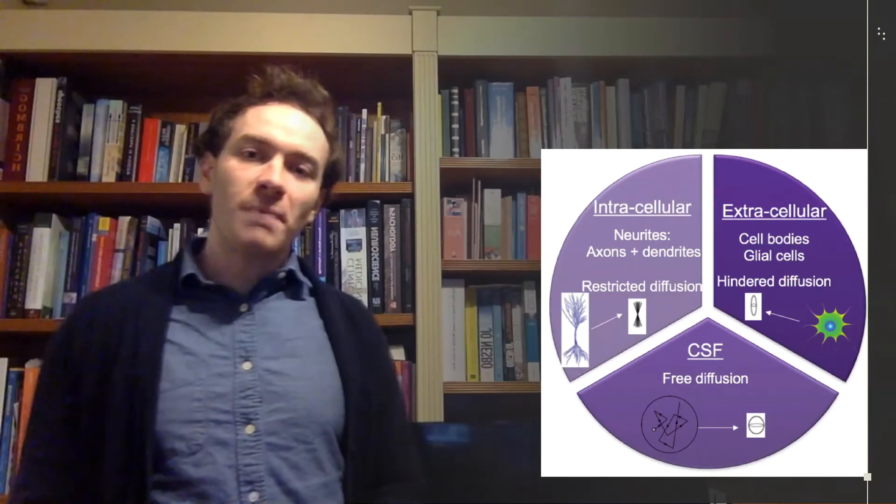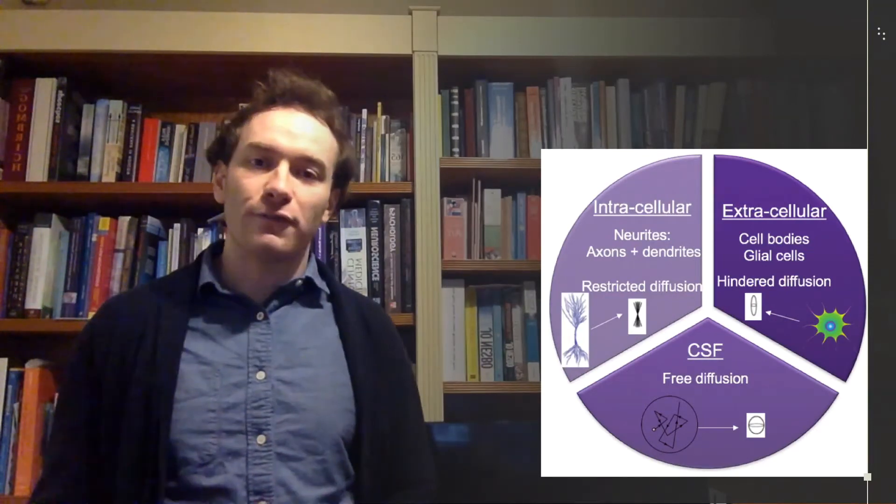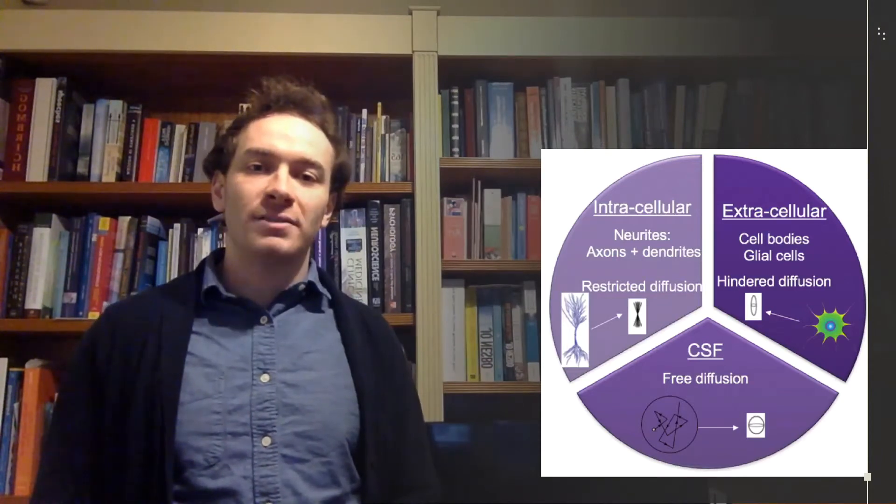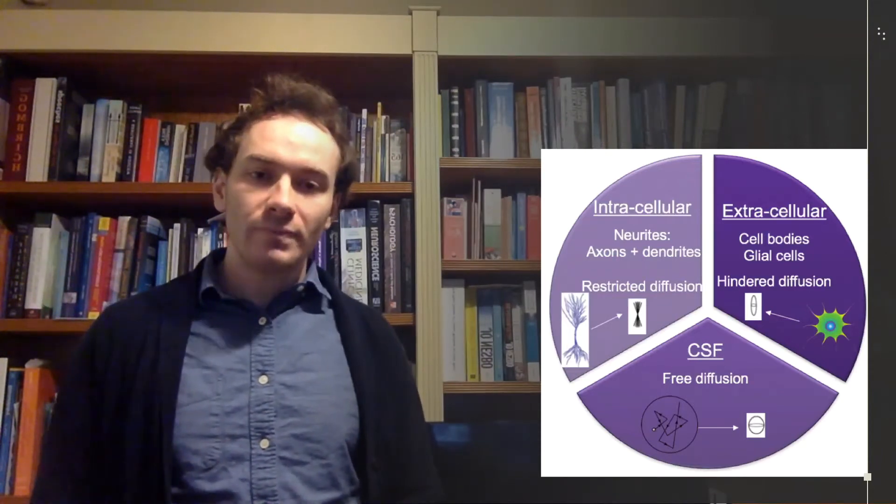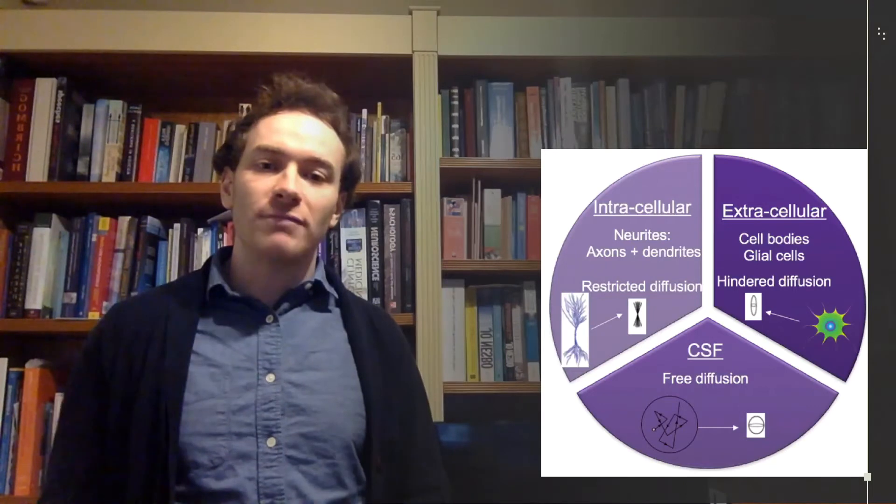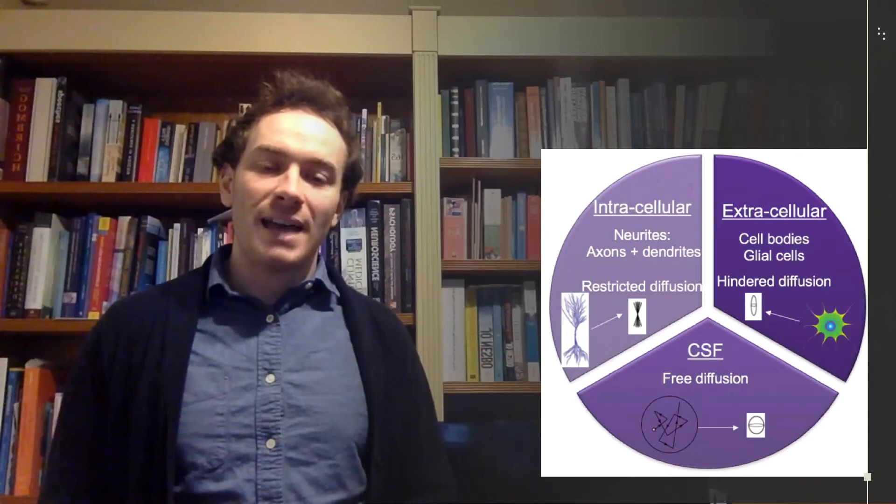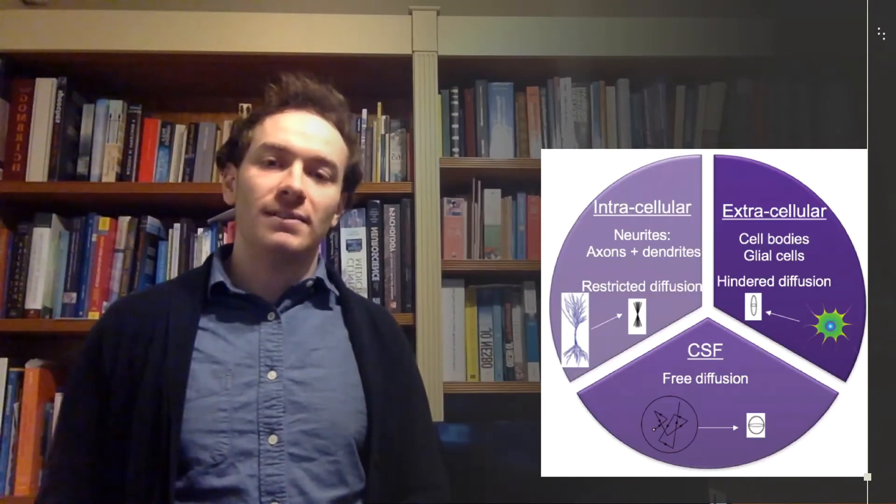One such model is the Neurite Density and Orientation Dispersion Framework. This is a three-compartment model that separates out diffusion estimates. In one compartment, we have restricted diffusion, referred to as Neurite Density Index, which is thought to be associated with the intracellular space.